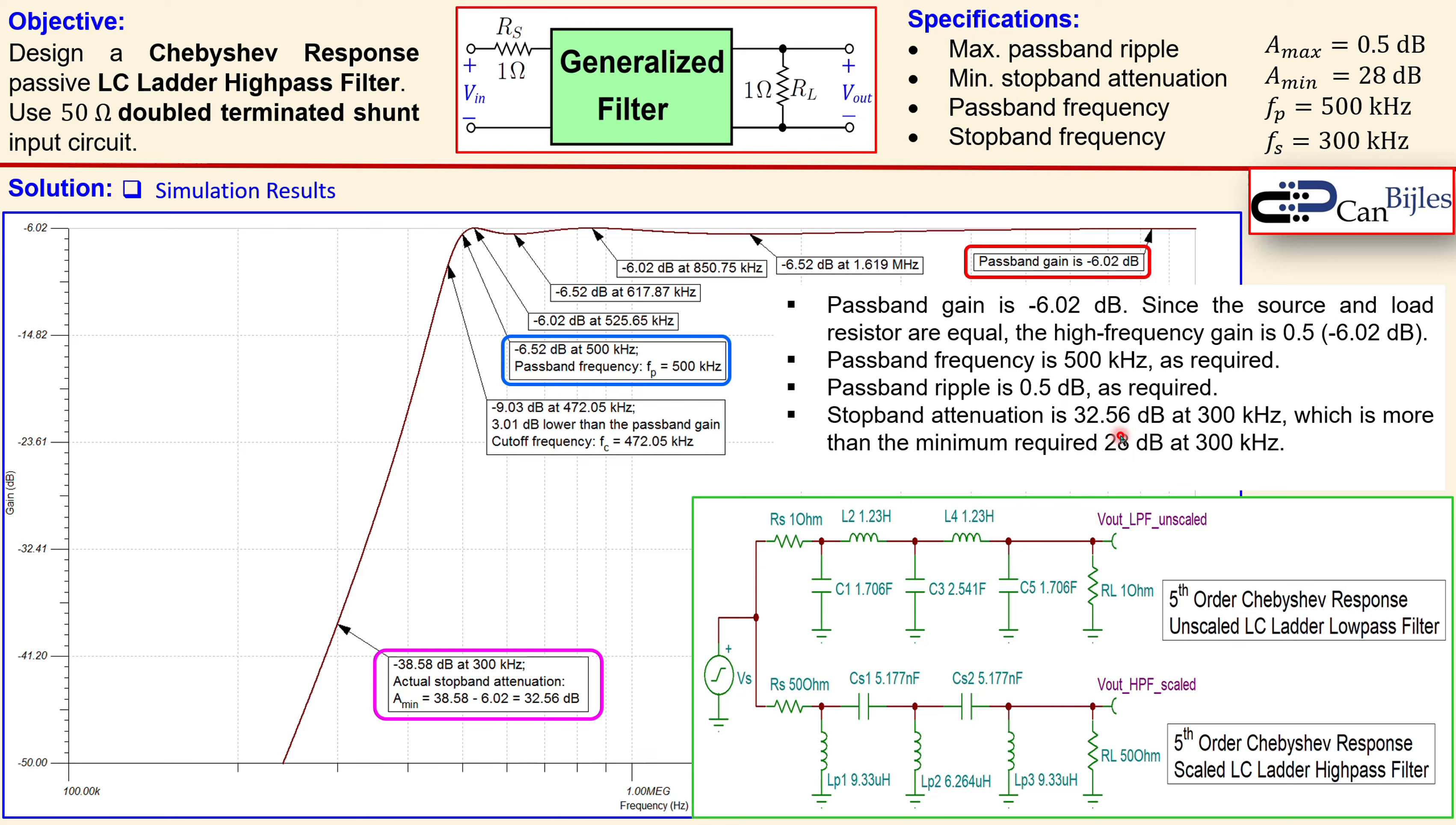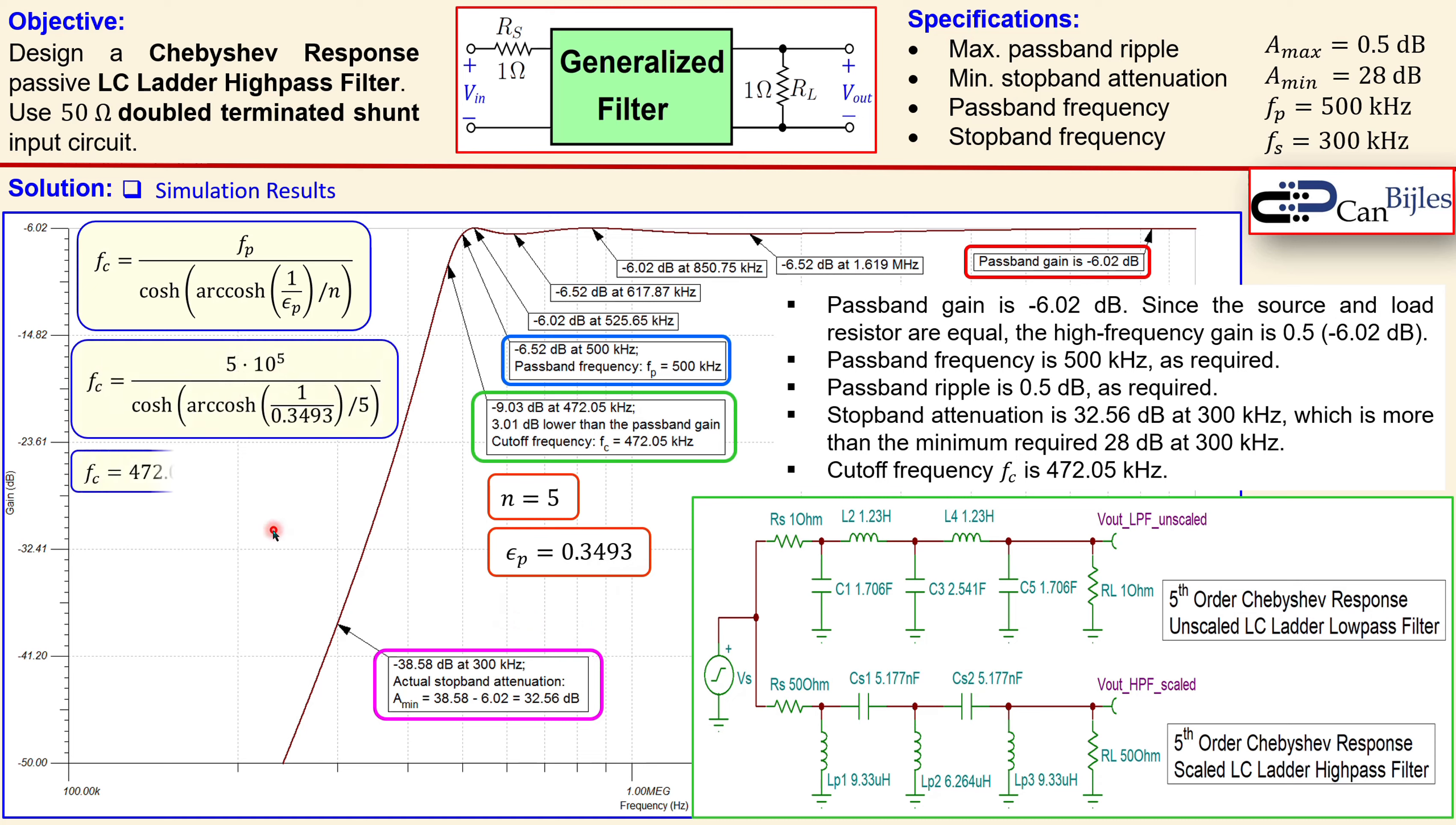The final one is the cutoff frequency which was not a specification. We have labeled that here and that is 472.05 kilohertz. But how do we calculate that? You can calculate that for the high pass filter configuration using this formula. You see the fp, that is 500 kilohertz, the cosine hyperbolicus and arcosine hyperbolicus, and also the epsilon p and order. I won't derive this formula, but we will use it. The n is 5 and the epsilon p is 0.3493. Let's substitute that and also this 500 kilohertz from our specifications. When you do that, you get 472.03 kilohertz, so very close to what we actually see in the simulation. This is just a small rounding error.